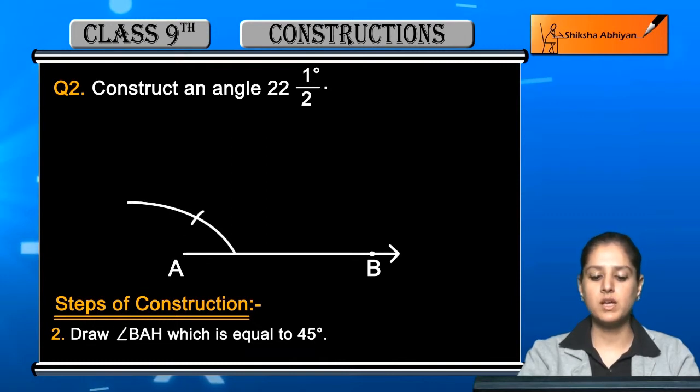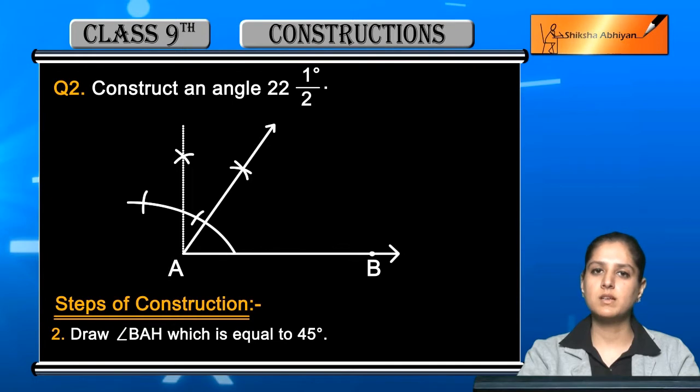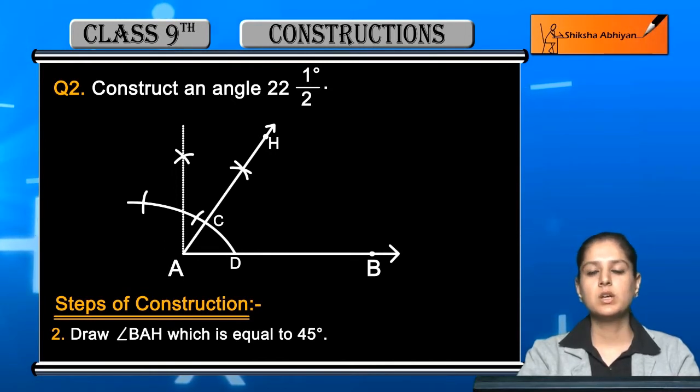The angle BAH that you construct should measure 45 degrees. So we have angle BAH which is 45 degrees. When we bisect this angle, we will automatically get an angle of 22 and a half degrees.